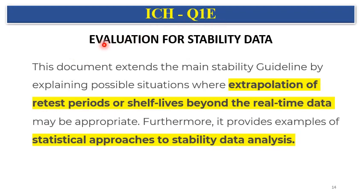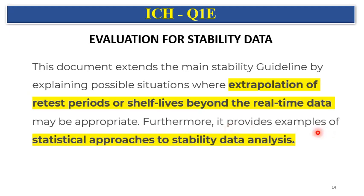ICH Q1E deals with evaluation of stability data. It gives clear understanding of requirements, how stability studies are done, what parameters are to be tested, and how data should be evaluated. ICH Q1E extends the main stability guideline by explaining situations where extrapolation of retest period or shelf life beyond the real-time data may be appropriate. It also gives examples of statistical approaches for stability data analysis.